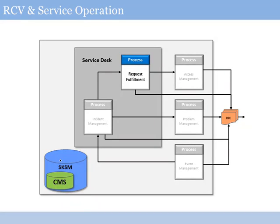When we look at the role of release control and validation in service operations, it's largely to deliver effective working services so that service operation can provide appropriate support. The process of request fulfillment is included in the RCV cluster because many service requests are routine service changes that have been treated as standard changes, pre-approved and passed down to the organization. We wouldn't be doing the right job of looking at change management governance if we weren't also looking at the process that handles routine change implementations in a way that reduces red tape and delivers services more cost effectively.